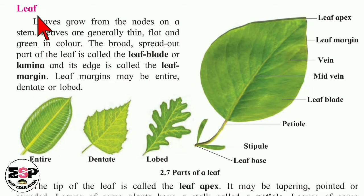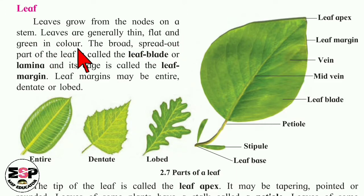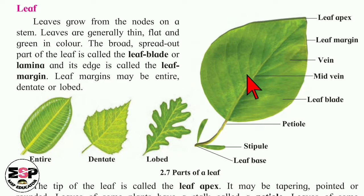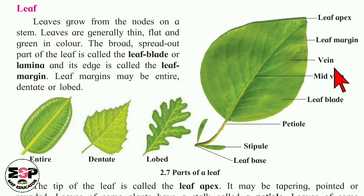Leaves grow from the nodes on a stem. Nodes are present on the stem and from each node, leaves are growing. Now, leaves are generally thin, flat and green in color. The broad, spread-out part of a leaf is called a leaf blade or lamina. See here, figure 2.7 — parts of a leaf is shown to you. Observe this figure carefully.